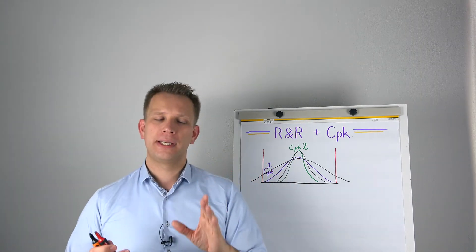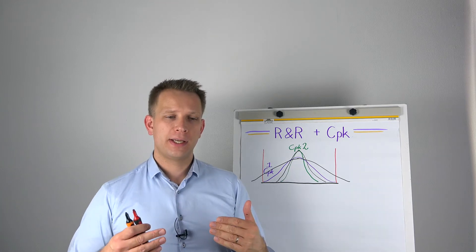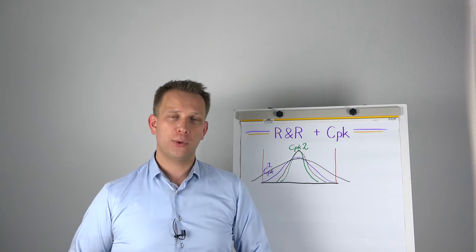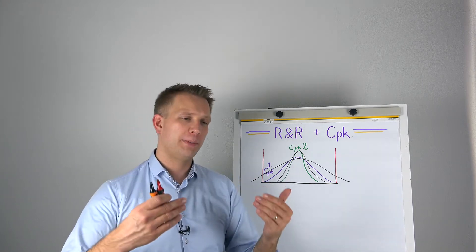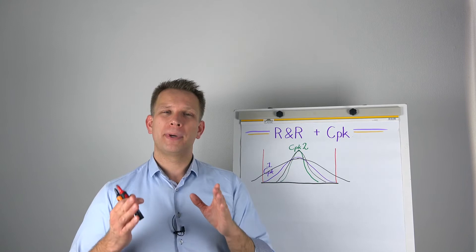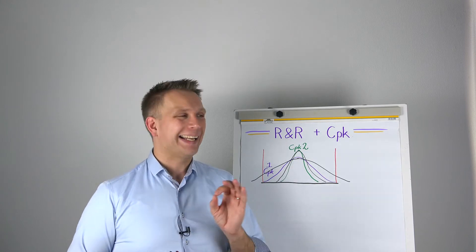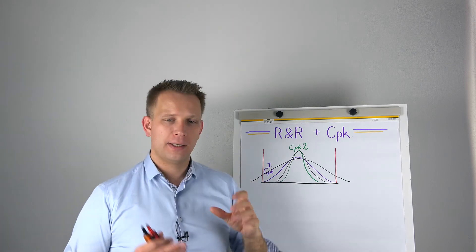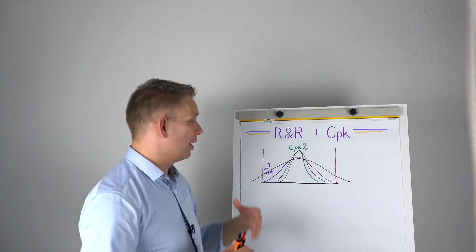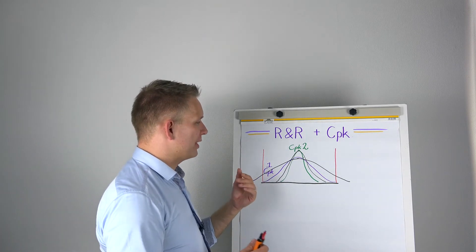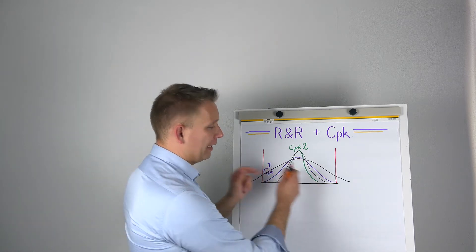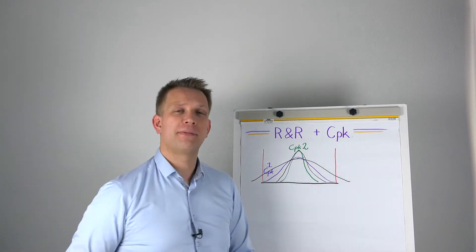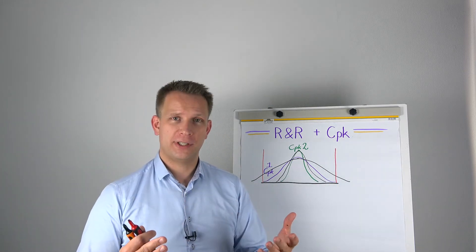Now, a word on the R&R percentage. You see, there is this idea that the R&R percentage needs to be lower than 10, or well 10 to 30 may be okay, higher than 30 really not okay, but also keep in mind that you can get this R&R by dividing the extra variance that you get from the measurement system by the total variance you observe in the process, or by dividing it by the tolerance limits.